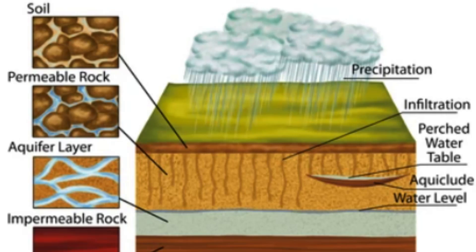Permeability, on the other hand, refers to the ability of a rock or sediment to transmit fluids. It is a measure of how easily water can flow through the pore spaces in the rock or sediment. Permeability is influenced by the size and connectivity of the pore spaces, as well as the properties of the fluids themselves.